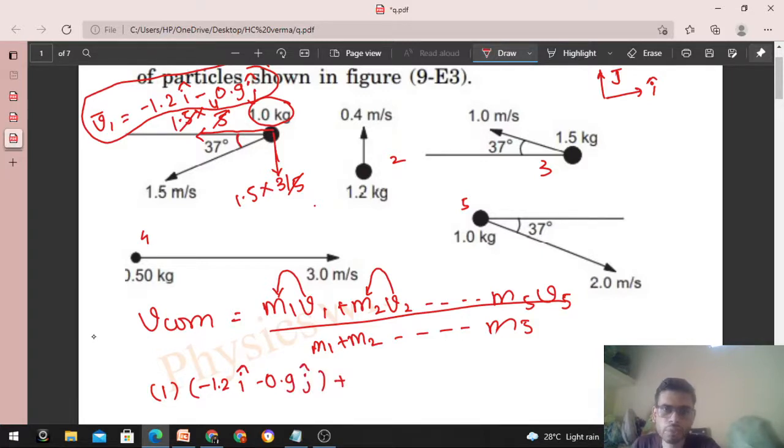Fine. Plus m2 is 1.2 kg. So 1.2 into its velocity which is upward, 0.4. So 0.4 in j cap.